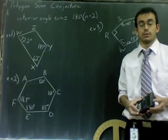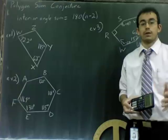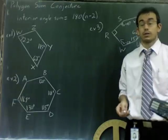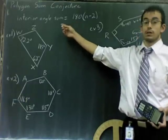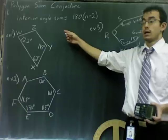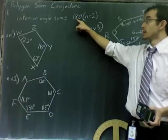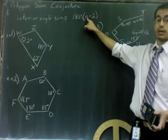Hi, welcome to the video on polygon sum conjecture. In this video you're going to see how to use the polygon sum conjecture, which is right here. It's that the interior angle sum of any polygon is equal to 180 times n minus 2. Well, this n means the number of sides.